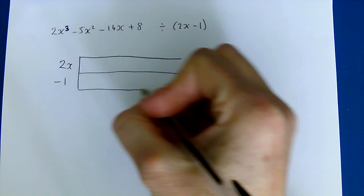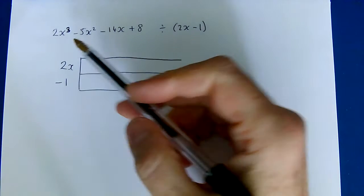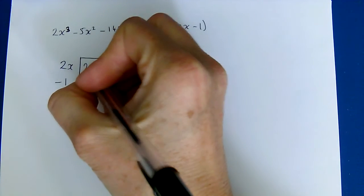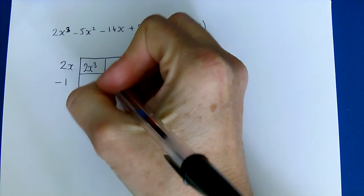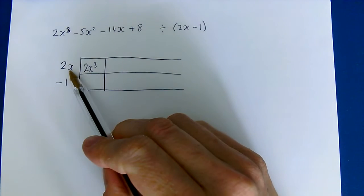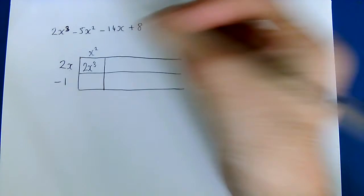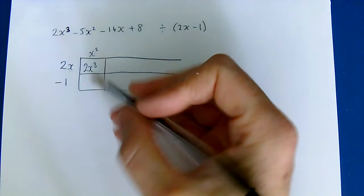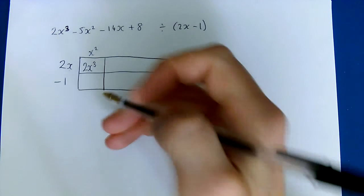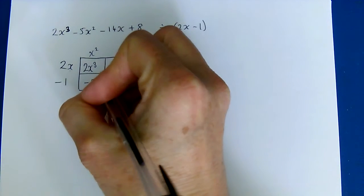Okay, now the first thing that we need to aim for is 2x cubed. So we think what do we multiply 2x by to make 2x cubed? We need x squared and now we fill in the box below. x squared times negative 1 is negative x squared.